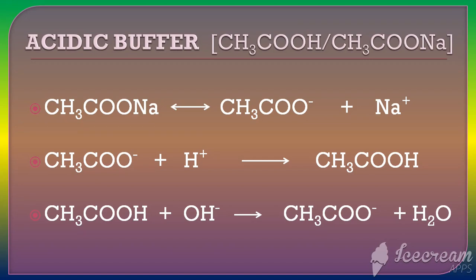In a strongly basic medium, the undissociated acetic acid present in the solution combines with OH- ions to form acetate ions and water. In this way, the OH- ions added are consumed and the pH of the solution remains practically unchanged.